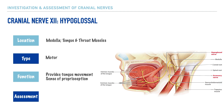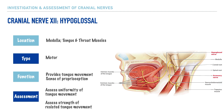So to assess the hypoglossal nerve, we'd want to first begin by assessing the uniformity of an individual's tongue movement. For example, can they stick out their tongue, and then to the sides to the same degree. Following this, we can also assess the strength of their tongue, assessing its resistance to movement.